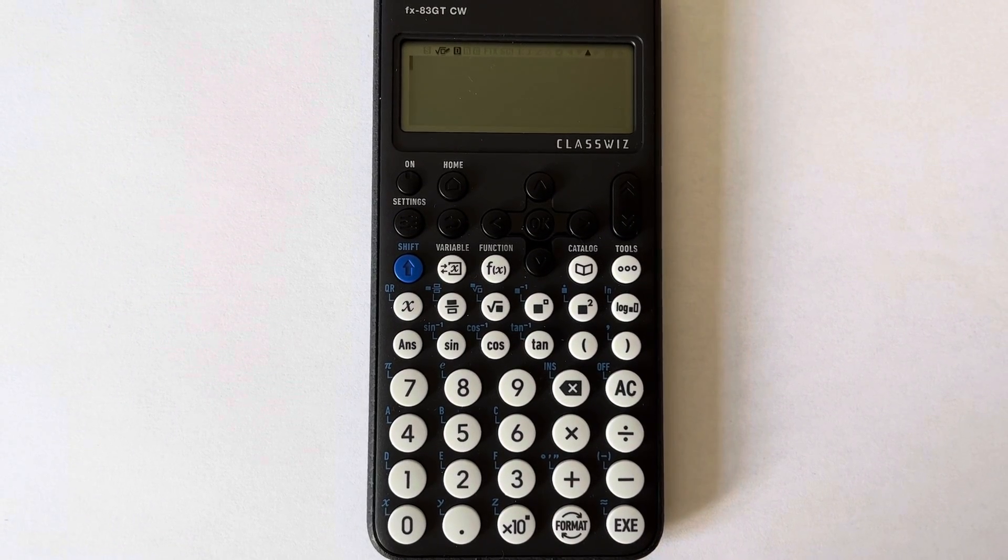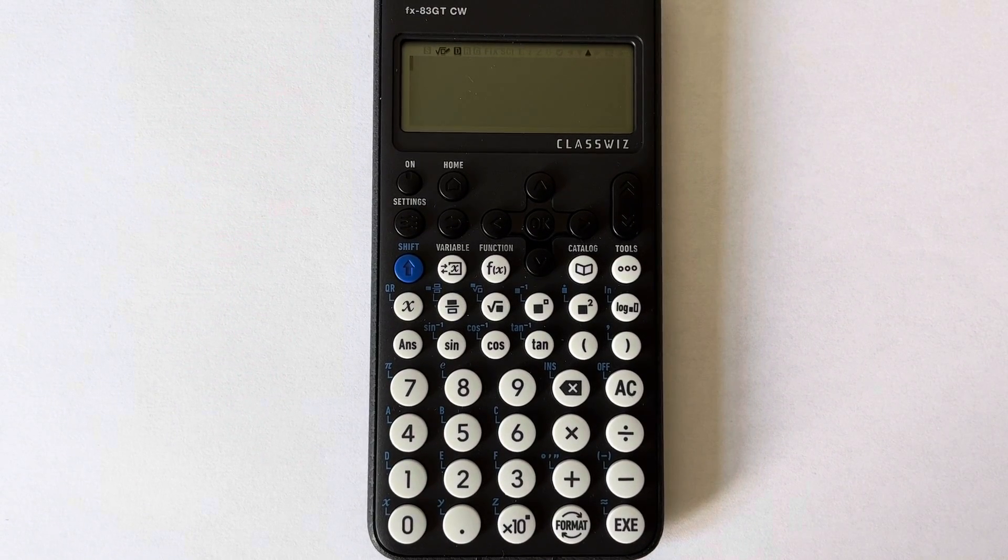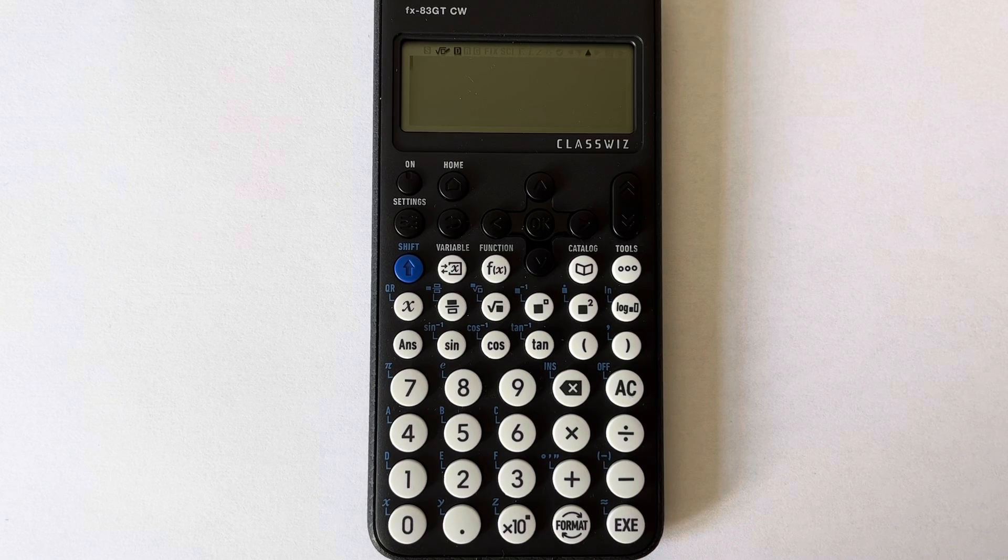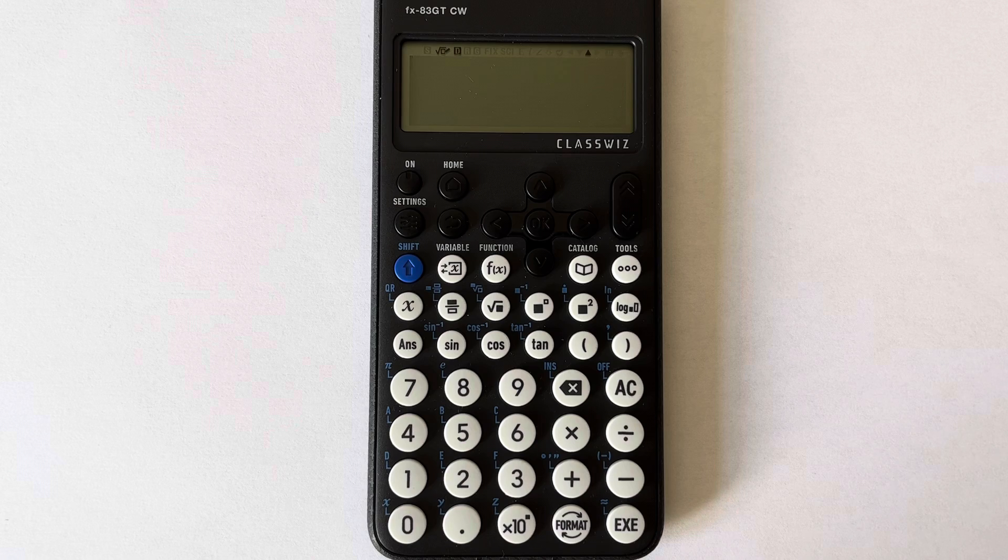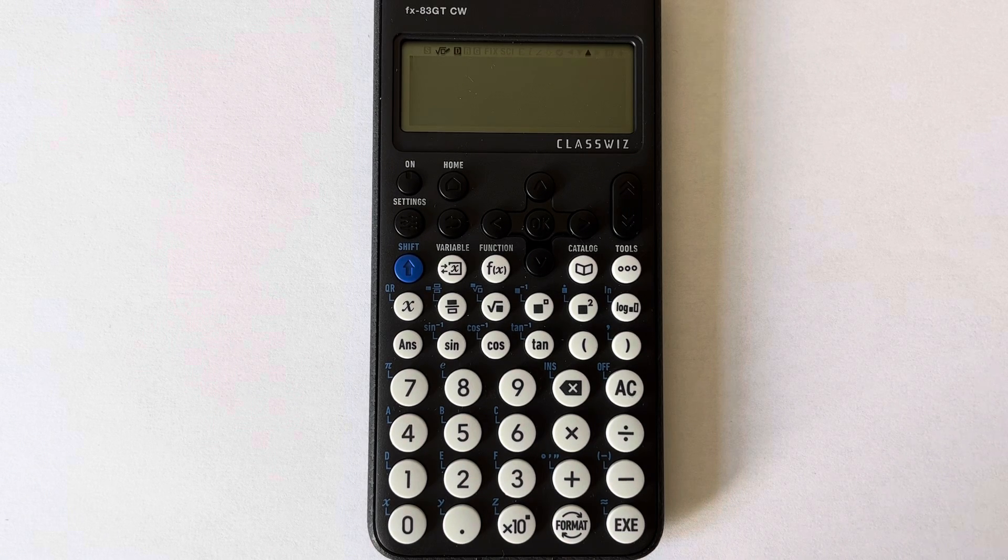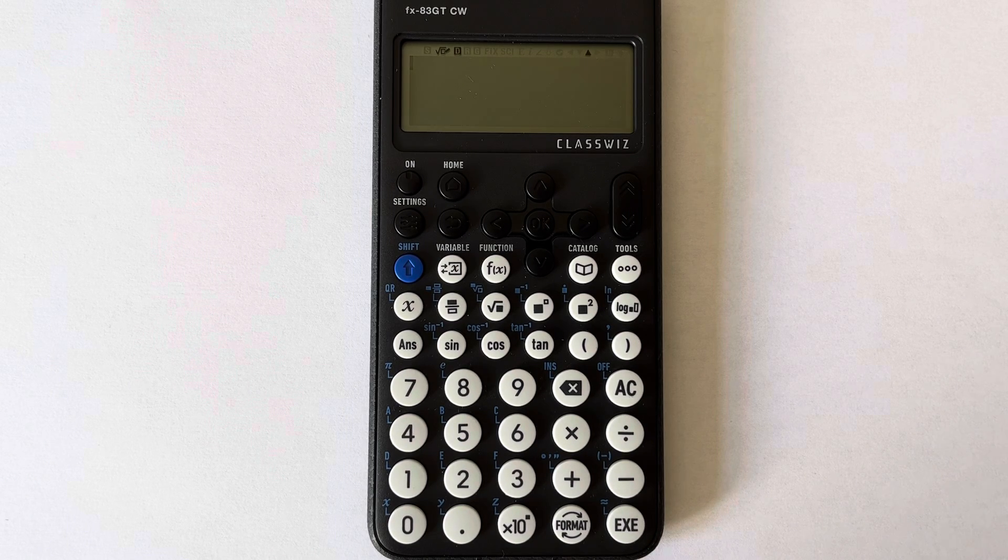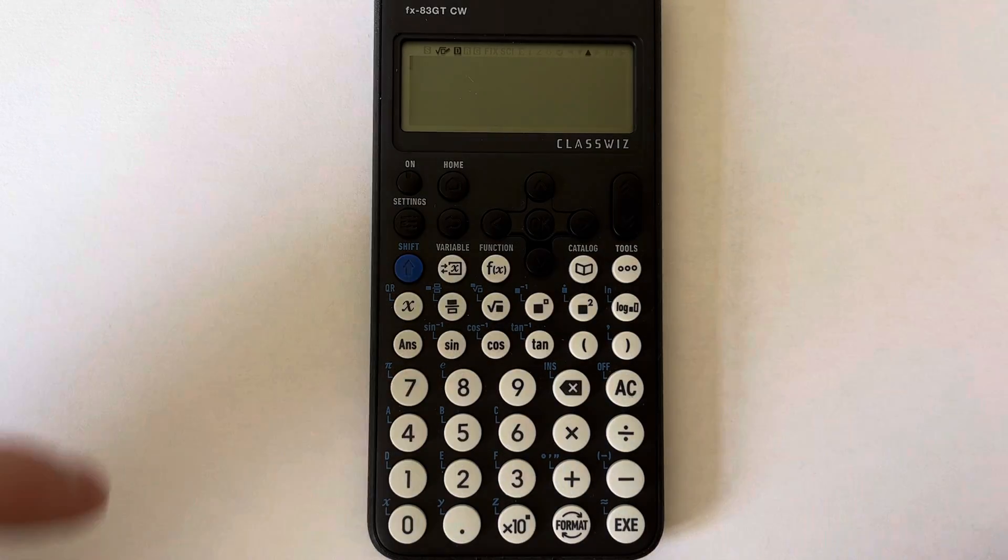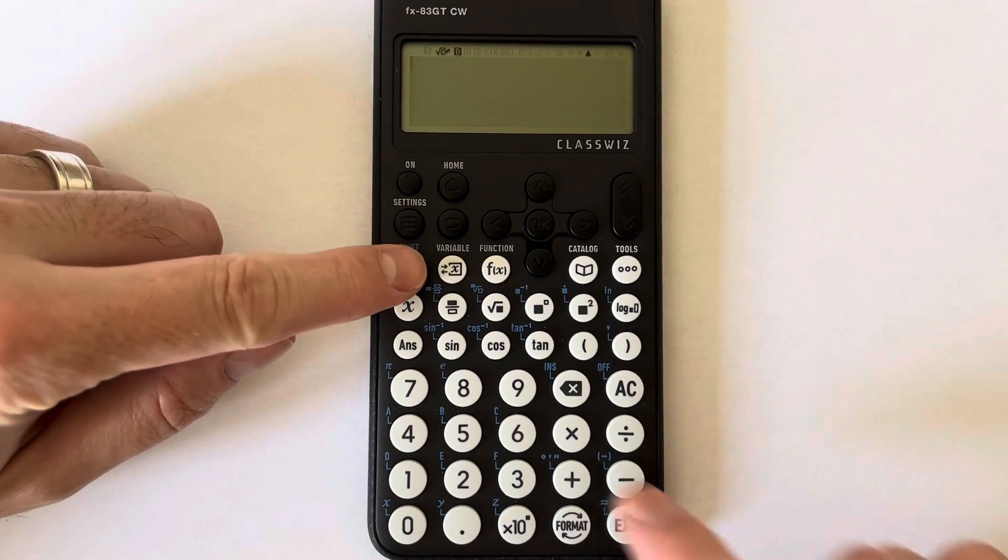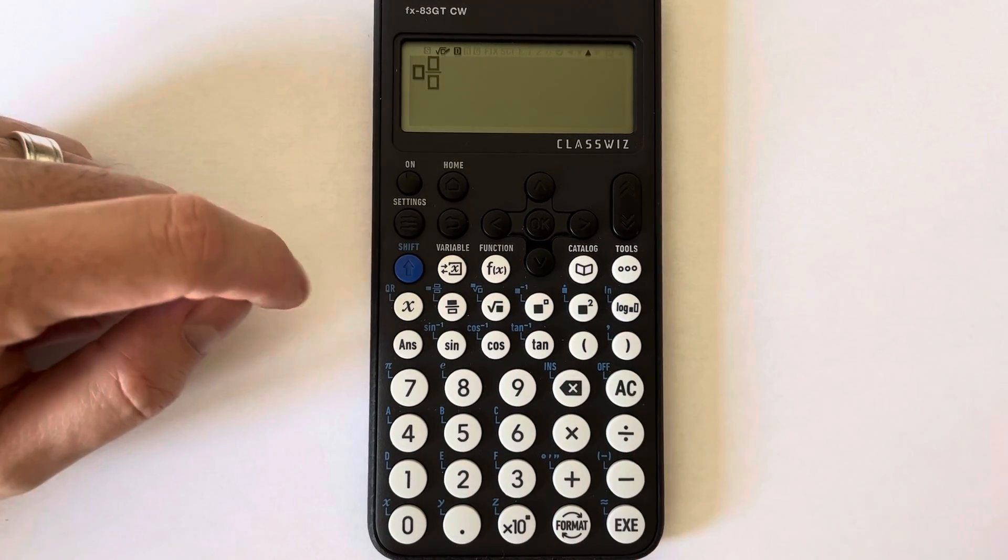Hi guys, welcome back. This is Maths Mark. Today I'm going to show you how to type in a mixed number on the Casio FX83GTCW calculator. So to get the mixed fraction, you need to press shift and then the fraction key.